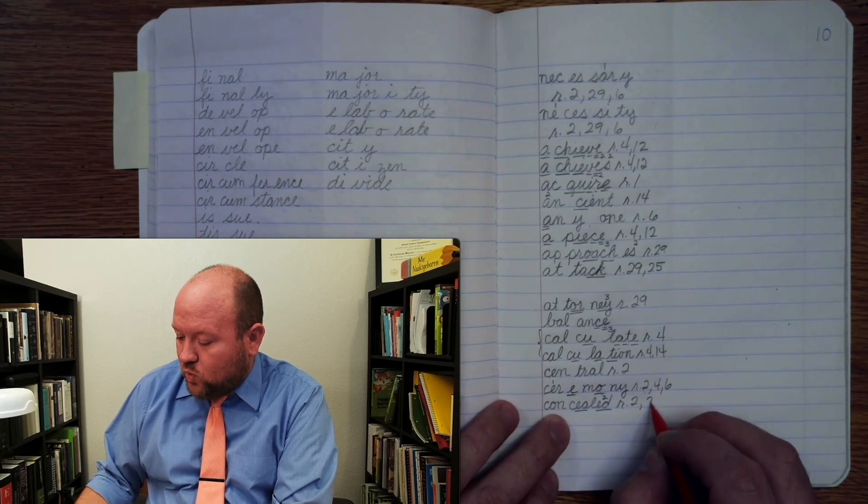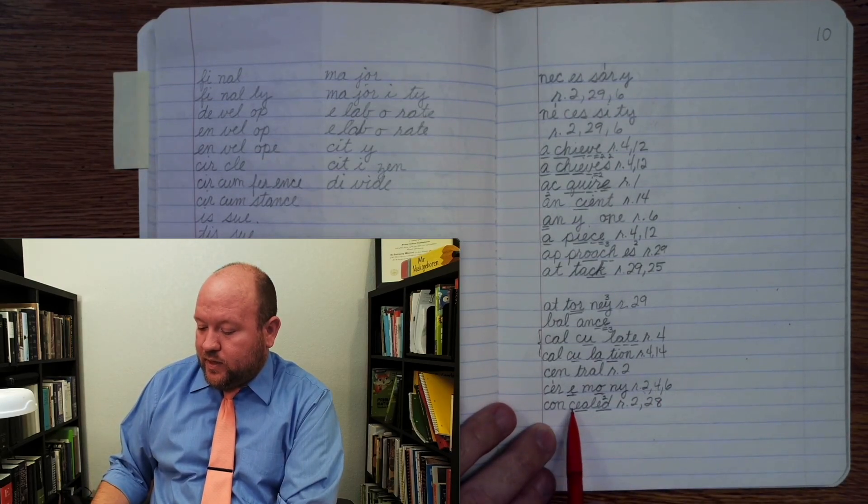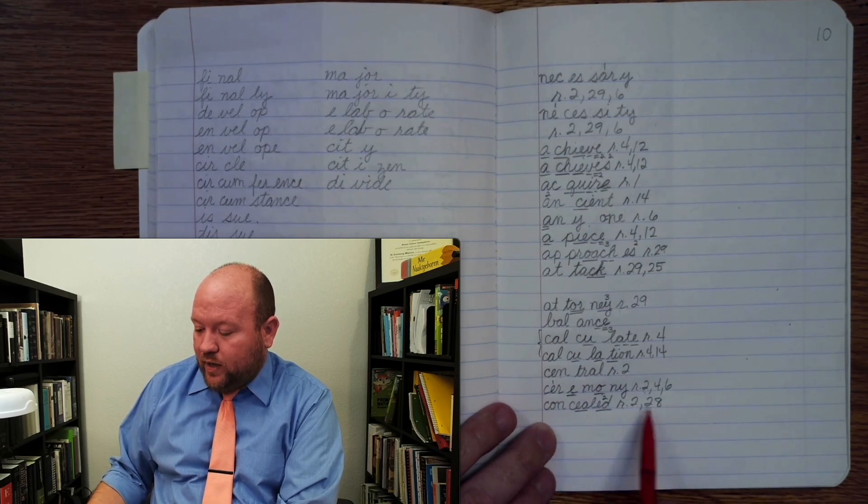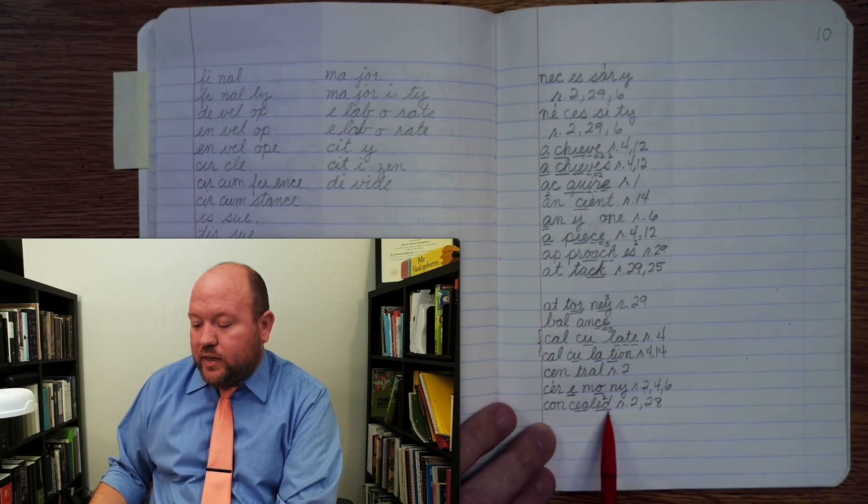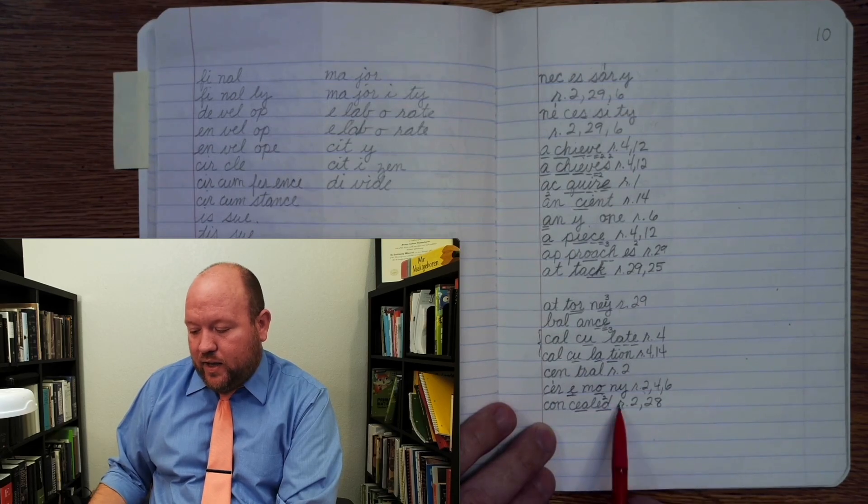L-DA once. Two. Rule twenty-eight. Here, the C can say ss when followed by E-I-Y. Rule two. We only use E-D for past tense. Rule twenty-eight. And it's saying a second sound.